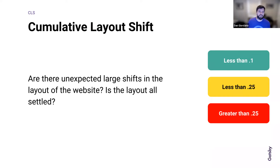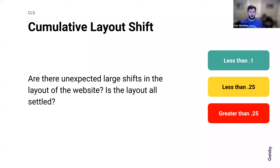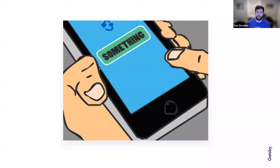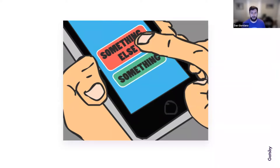Cumulative Layout Shift is my favorite because it's probably the most visible and annoying one to show any customer. Are there any unexpected large shifts in the layout while the website is being loaded? Let's say in the first two seconds you get the title and body of an article and you're about to click a link — then all of a sudden an ad pops up, because they didn't want to load the ad in the beginning. You can see this in the GIF: an annoying ad loading in at the end. Google is digging deeper than just surface-level analytics.